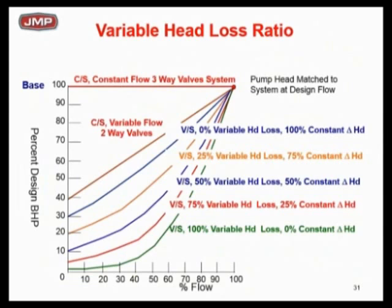Let's stay at 50% flow, because 50% flow is going to be the best majority of the time — half load, heating load, cooling load, half flow. Let's look at the real world where we live most of the time. Going to 75% variable head and 25% constant, on the red line at 50% flow, I'm up to about 25% brake horsepower. You can see what's happening as I change that ratio.